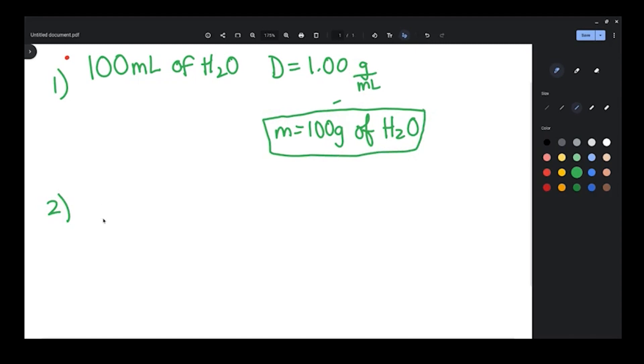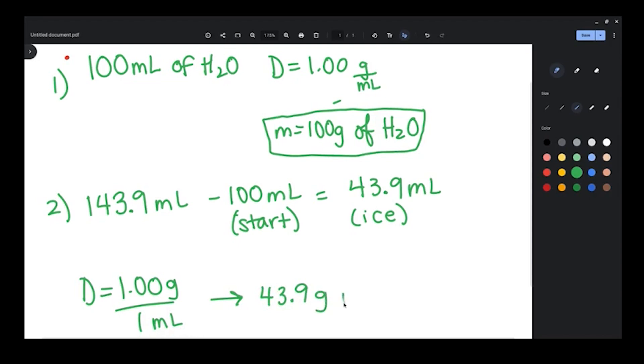For number two, we will have to determine the mass of the ice that was added. And when we had our final volume, we had 143.9 milliliters minus the 100 that we started with will leave us with the ice that had melted. So that came out to 43.9 milliliters. So again, the density of water is one gram per milliliter. So in that case, we don't have to do any math at all. It comes out to exactly 43.9 grams of ice.